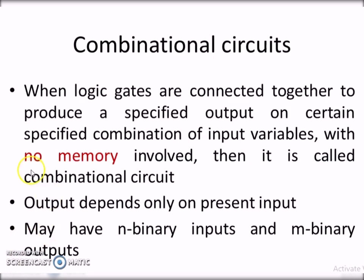An important property of combinational circuits is that no memory element is involved. That means the output depends only on the present input. In the example, the output 1 depends on the inputs 1 and 0. A combinational circuit may have n binary inputs and m binary outputs.